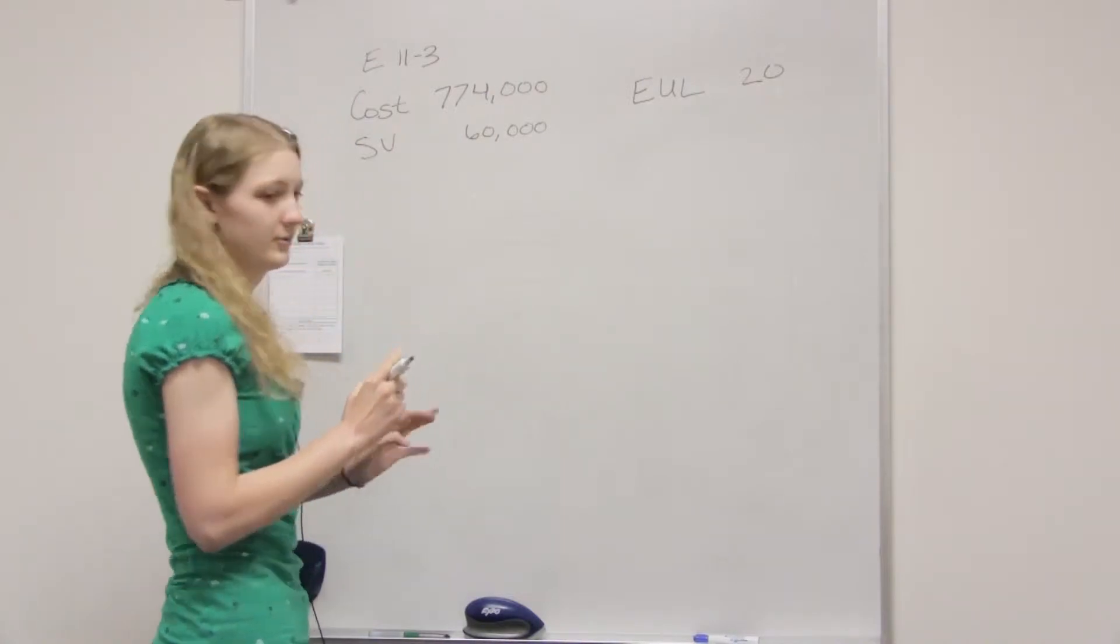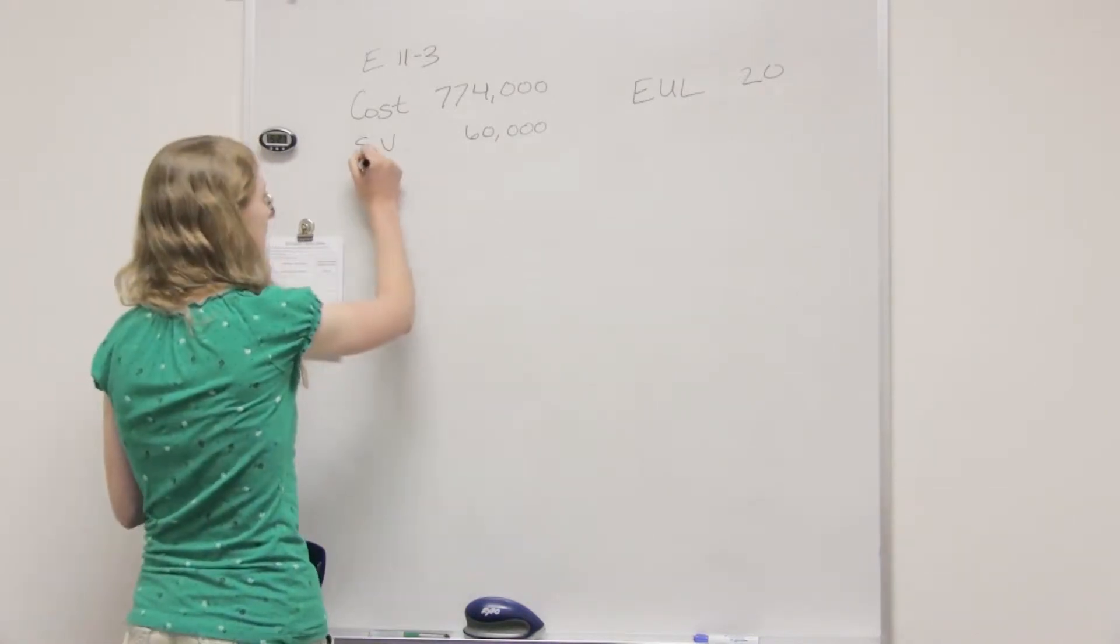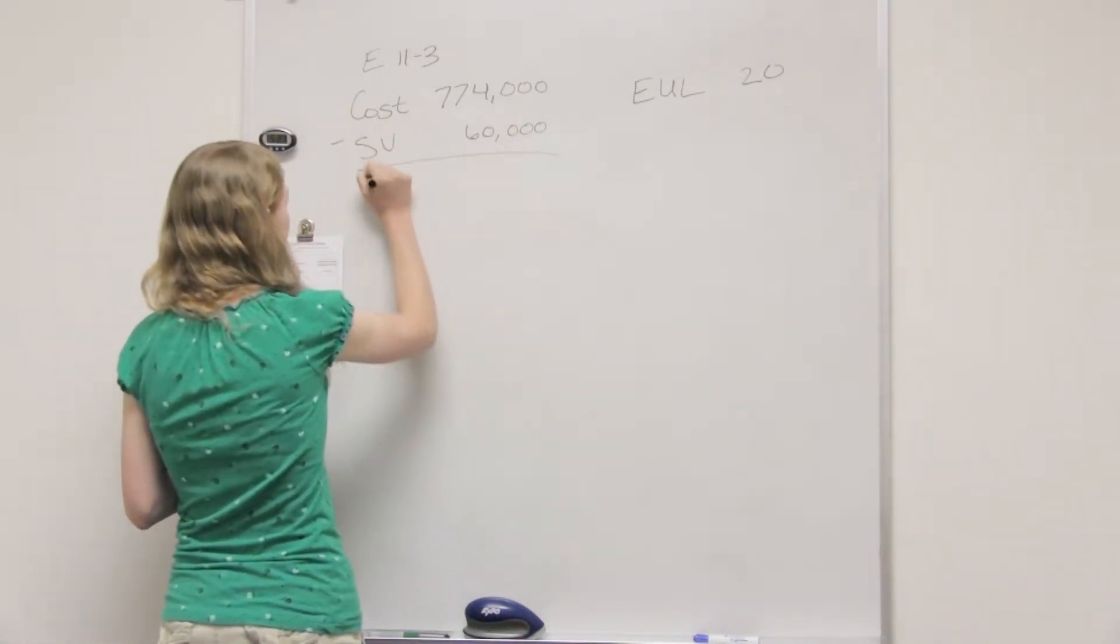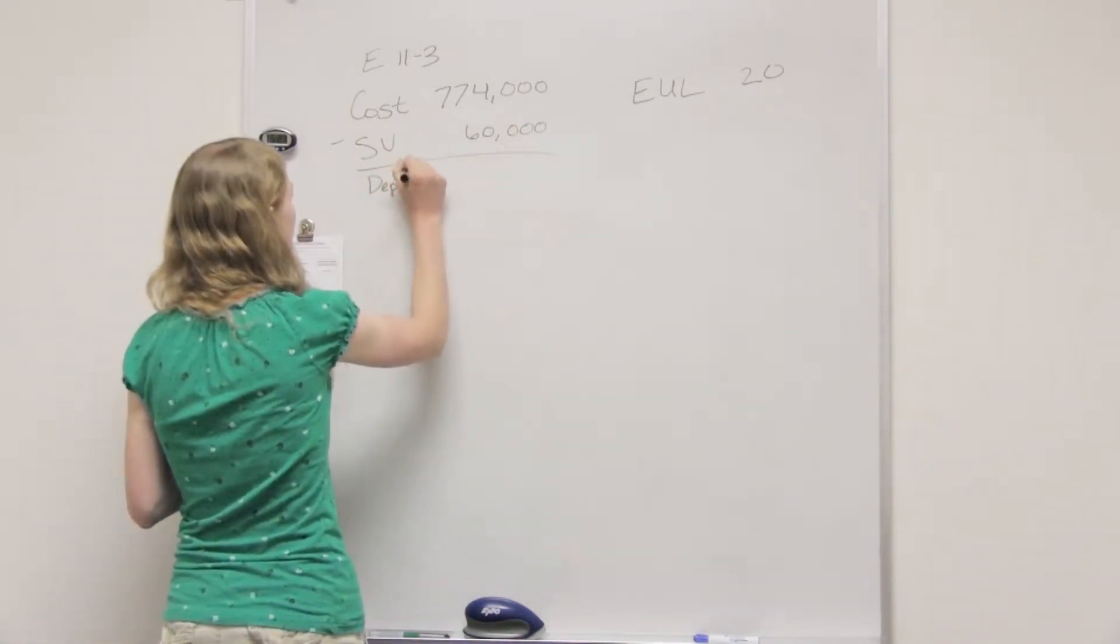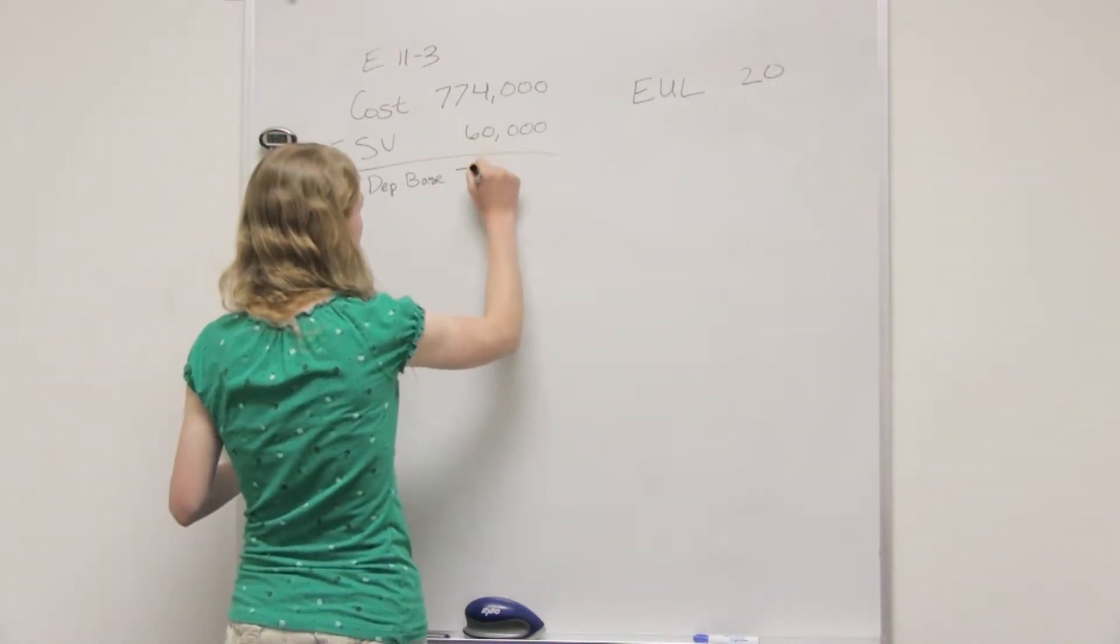So first, we need to find our depreciable base. And we find that just by subtracting these two. And that would be 714.